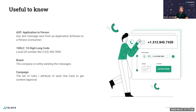What is important to understand is: what is A2P? A2P is any text message sent from an application software to a person — it's not P2P, which is person-to-person normal interaction. 10DLC is the 10-digit long code, which is the normal or common local US number. The brand is the company or entity sending the messages, so it's clearly identified. And the campaign is the set of rules or attributes that each use case needs to report to get content approval.